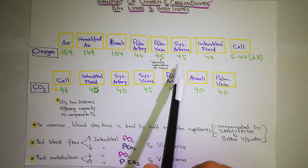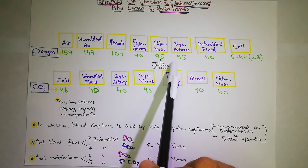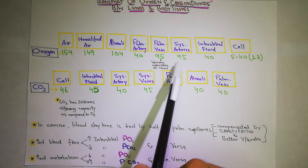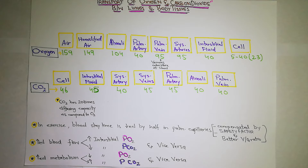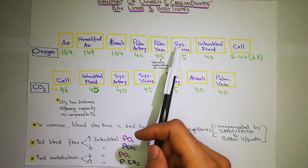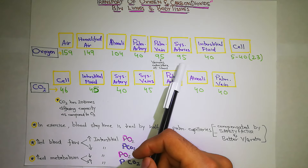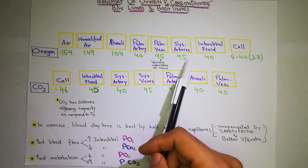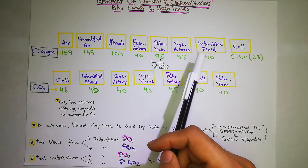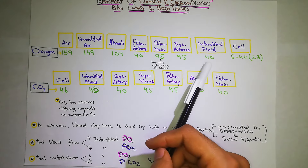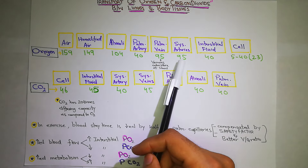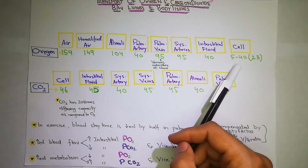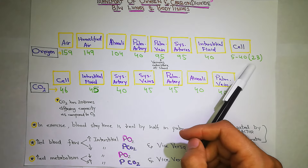اب یہ 95 mm of mercury کا blood ہی systemic arteries میں جائے گا، یہی left side of heart میں جائے گا، اور پھر left side of heart سے نکل کے systemic arteries کے اندر چلا جائے گا۔ اب جب یہ systemic arteries سے cell کے پاس جانا ہے تو systemic arteries کا blood having 95 mm of mercury pressure - اور اب interstitial fluid میں 40 mm of mercury ہے۔